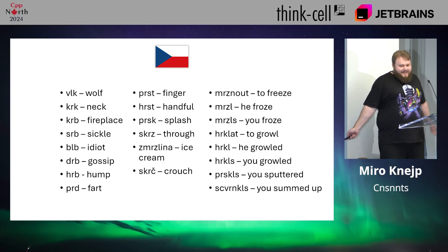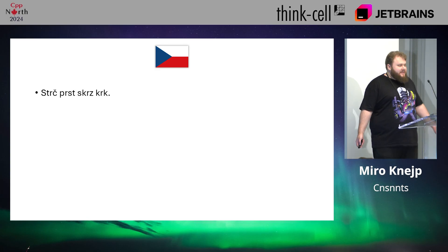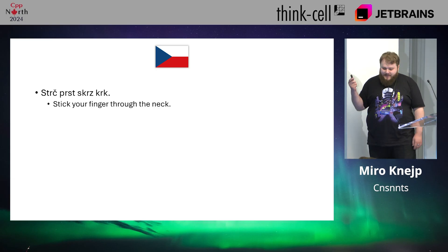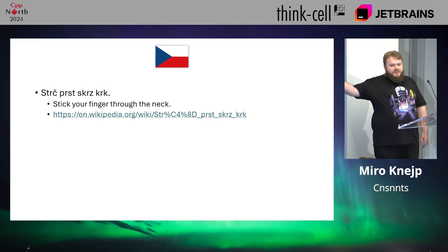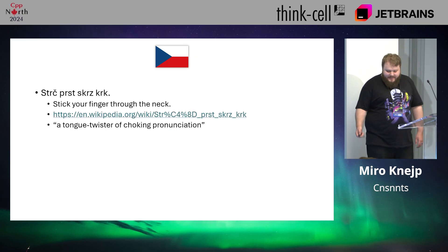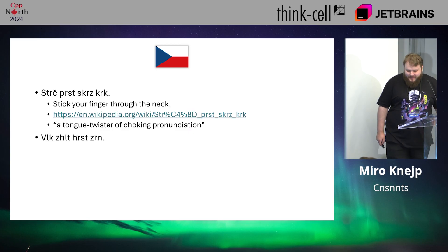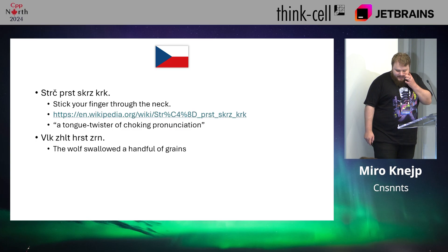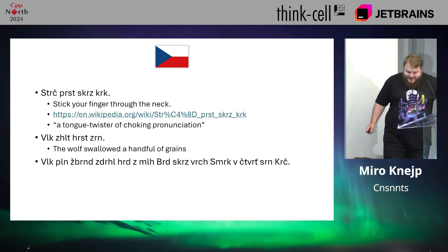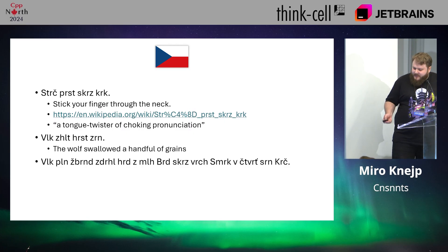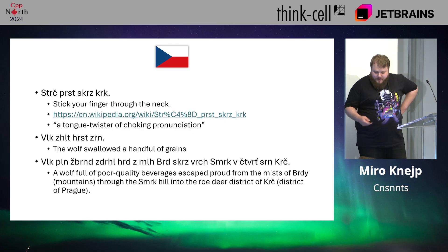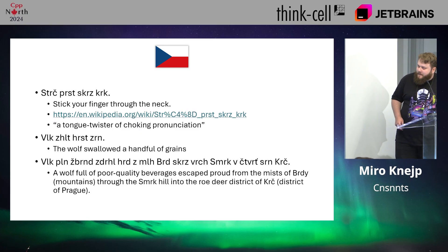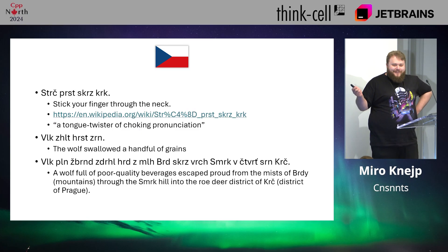And so we can actually create entire sentences from this. Like a favorite tongue twister: 'strrch prsk krsk krk.' This is what you ask your buddy to see how drunk they are. It means 'stick your finger through the neck,' and it's actually so famous it has a page on the English Wikipedia — described as a tongue twister of choking pronunciation. Another short one: 'The wolf swallowed a handful of brains.' And now comes an actual choking hazard: 'A wolf full of poor quality beverages escaped proud from the mist of birdie through the smirk hill into the roadier district of krk.' Do you see the compression potential when you don't have vowels in your language?